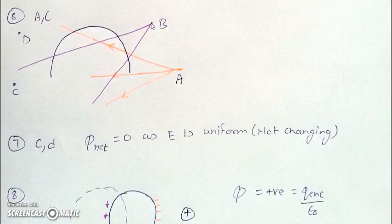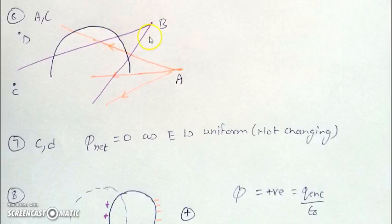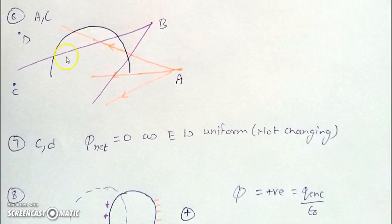But if the charge is placed at point B, some field lines from B will enter the surface but not leave from the surface. When a field line is entering, the contribution of its flux is negative; when it is leaving, it is positive. So for lines that enter and leave, the total contribution is zero. But this particular field line is entering from the surface but not leaving from the surface, so the total contribution of this field line will be negative. So it will change the net flux passing through the surface.